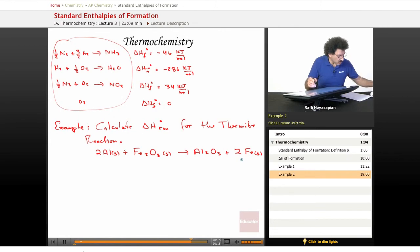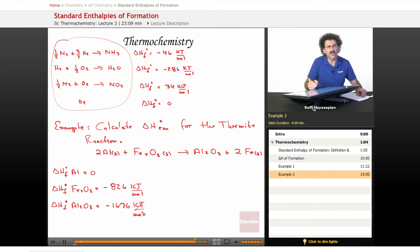Let's go ahead and list some delta H of formation values. The delta H of formation of aluminum equals zero. Aluminum is an element. Delta H of formation for aluminum oxide is equal to minus 1,676 kilojoules per mole. Wow, incredibly exothermic.